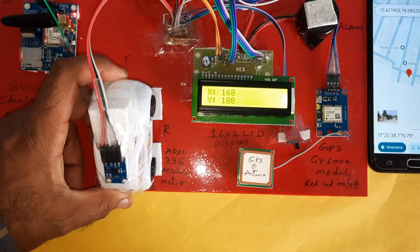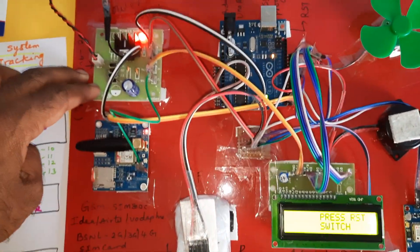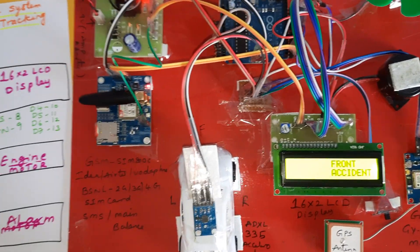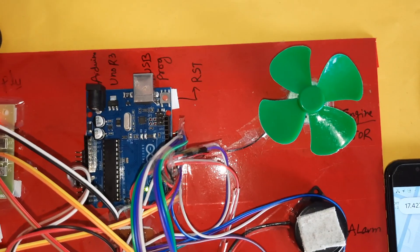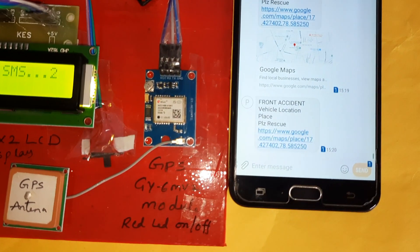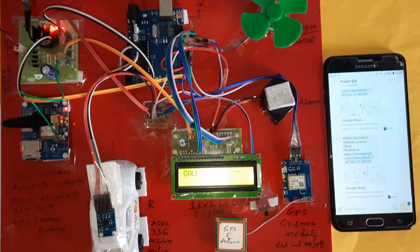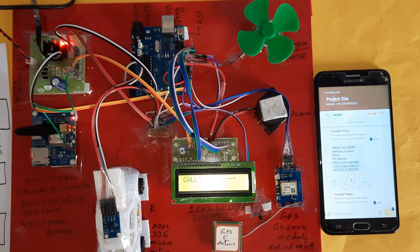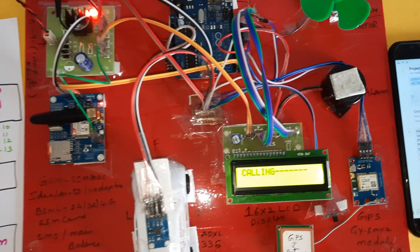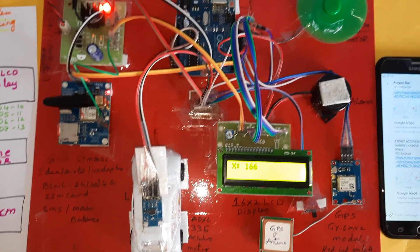So in total there are four alerts: right accident, left accident, front accident, and back accident. Components used: 5V power supply board, SIM 800C GSM module, Arduino UNO R3 board, engine, alarm, GPS GY6M V2 module, 16x2 LCD display, and ADXL335 accelerometer sensor. Normal engine started — the system is operational.